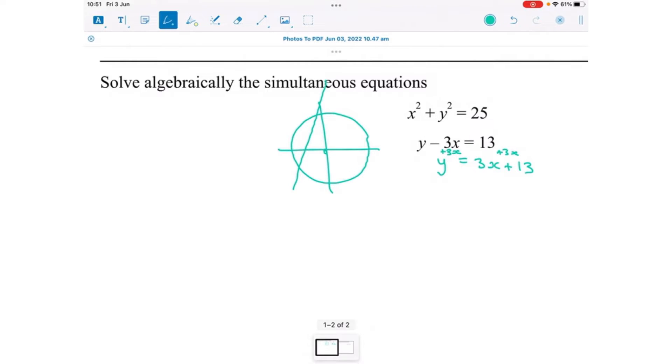So we've got potentially two different places where this equation and this equation are equal to each other because they cross at two, potentially two places. So what we're going to do when we're solving this question is find those two points. Find the two places where the circle and the straight line intersect.